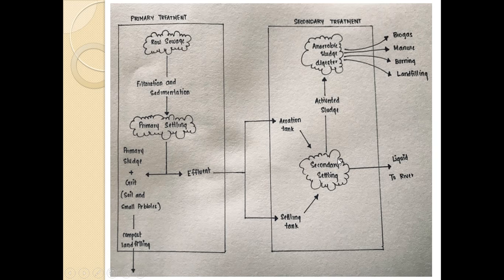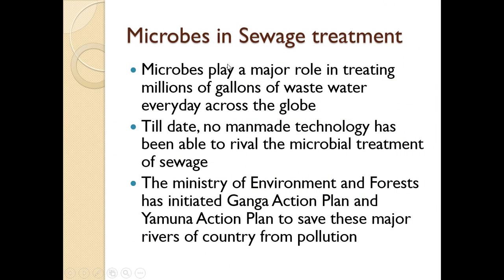The secondary effluent — the topmost supernatant — is discharged into the river, making it less polluted. In STPs, microbes play a very major role in treating millions of gallons of wastewater every day across the globe. The Ministry of Environment and Forest has initiated the Ganga Action Plan and Yamuna Action Plan to save these major rivers from pollution. With the help of STPs and microbes, the sludge is made less harmful before being discharged into the rivers.